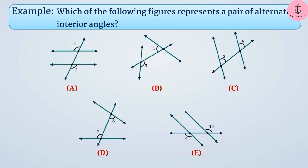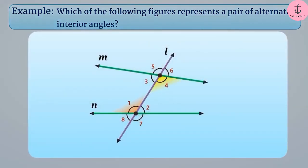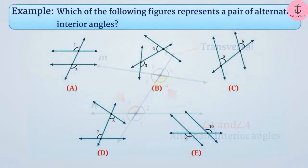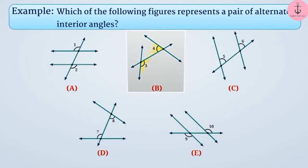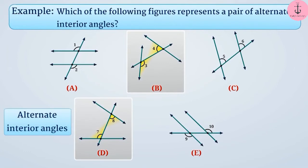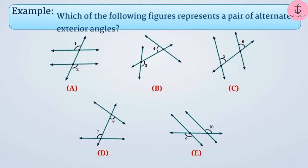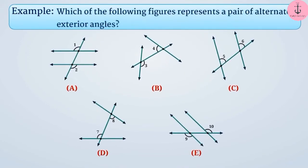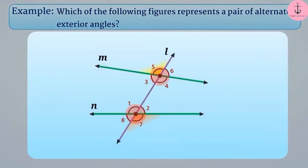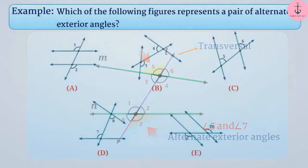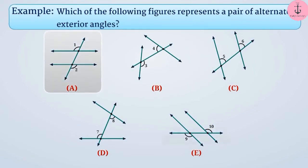Which of the following figures represents a pair of alternate interior angles? Two angles having a different vertex and on opposite sides of the transversal are called alternate interior angles — represented in figures B and D. Two angles having a different vertex and on opposite sides of the transversal are called alternate exterior angles — represented in figures A and D.